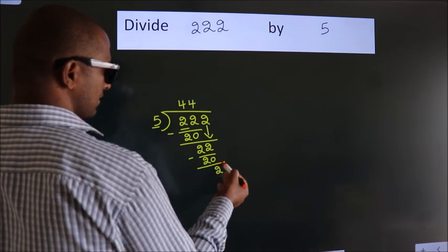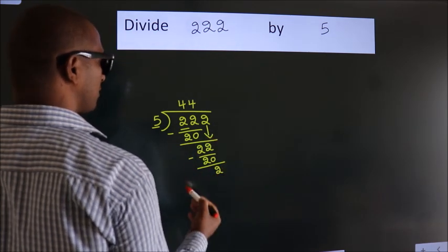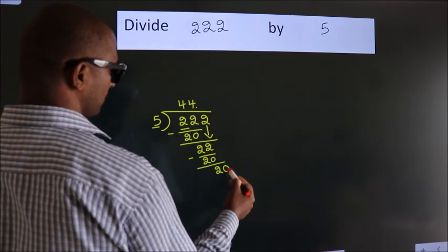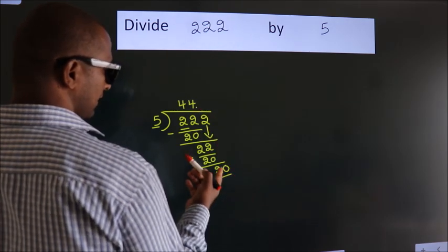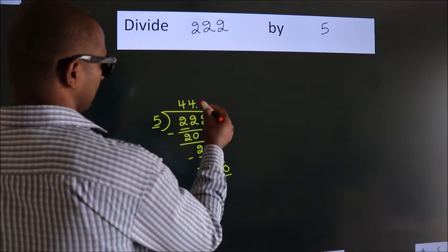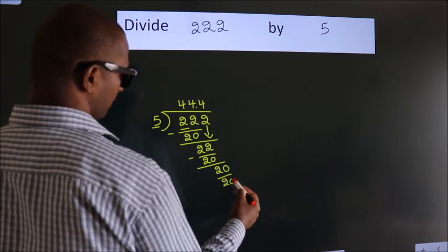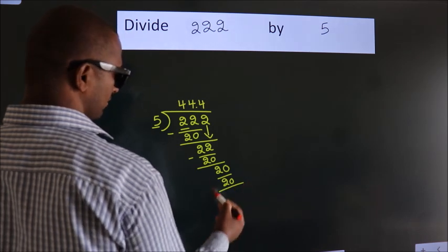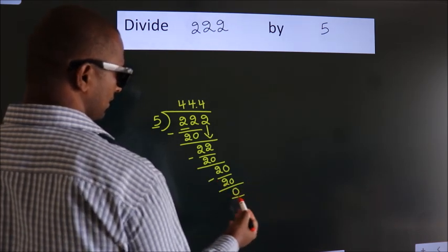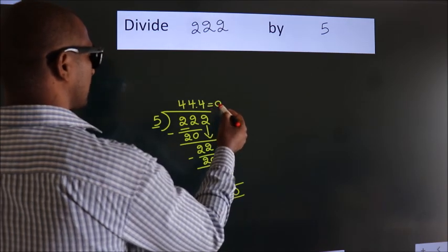After this, no more numbers to bring down. So what we do is we put a dot and take 0. So 20. When do we get 20 in the 5 times table? 5 fours 20. Now we subtract. We get 0. We got remainder 0. So this is our quotient.